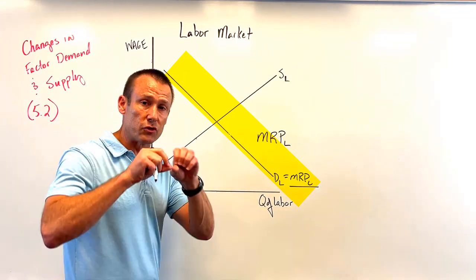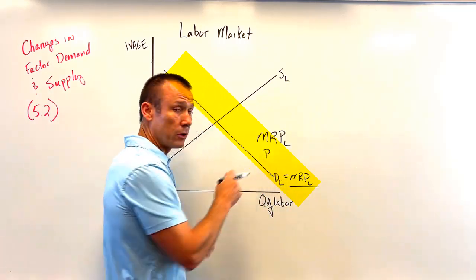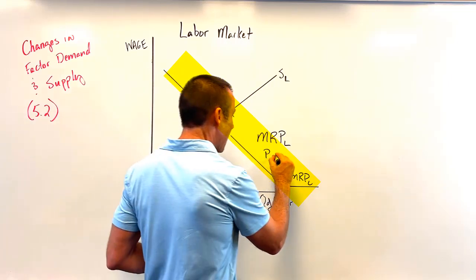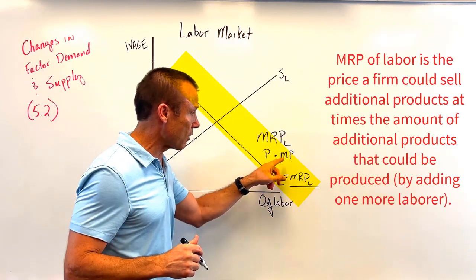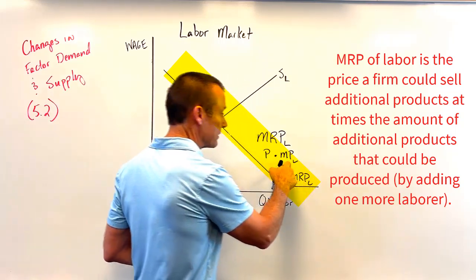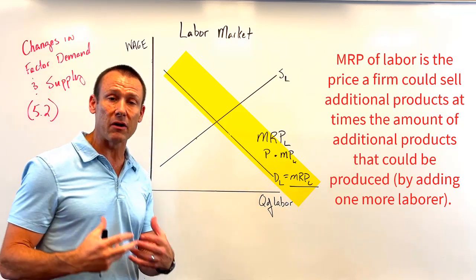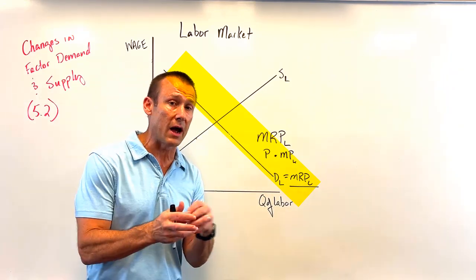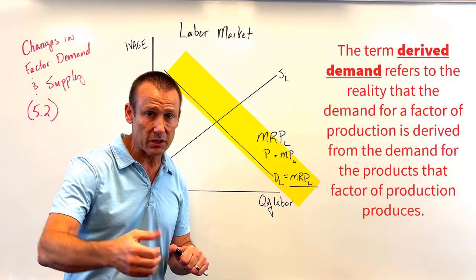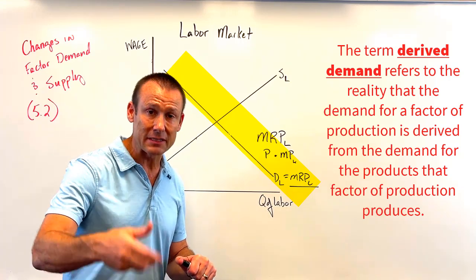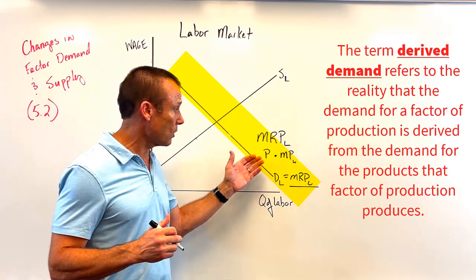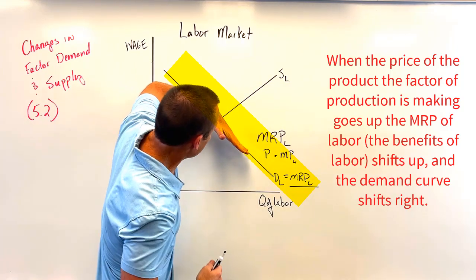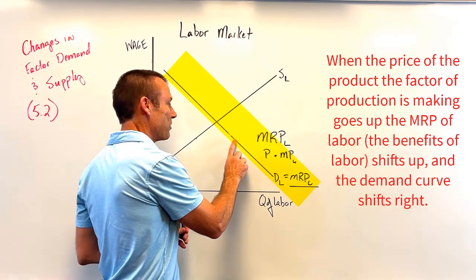Here is the big thing: anytime you think about marginal revenue product of labor, break it down. That additional revenue comes from the products that workers produce and the prices of those products — times the marginal product of labor, which is the additional output we get from hiring one more worker. So we're looking for price changes. This is the concept of derived demand — the demand for a factor of production is derived from the demand for the products that factor makes. If the price goes up for the goods labor is making, the marginal revenue product goes up.